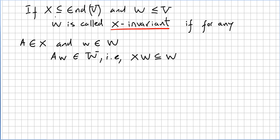If X is the set of all endomorphisms in a space V and W is a subspace of V, do not forget in a previous video we decided that this is going to be the notation for subspace. So this W is a subspace of a vector space V.